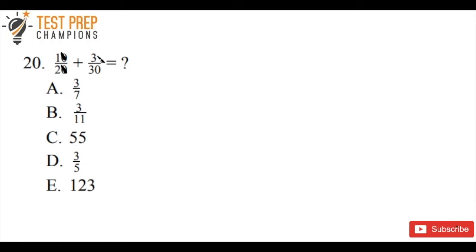And also here we've got 3 over 30, we can divide each number by 3, and you'd be left with 1 over 10.